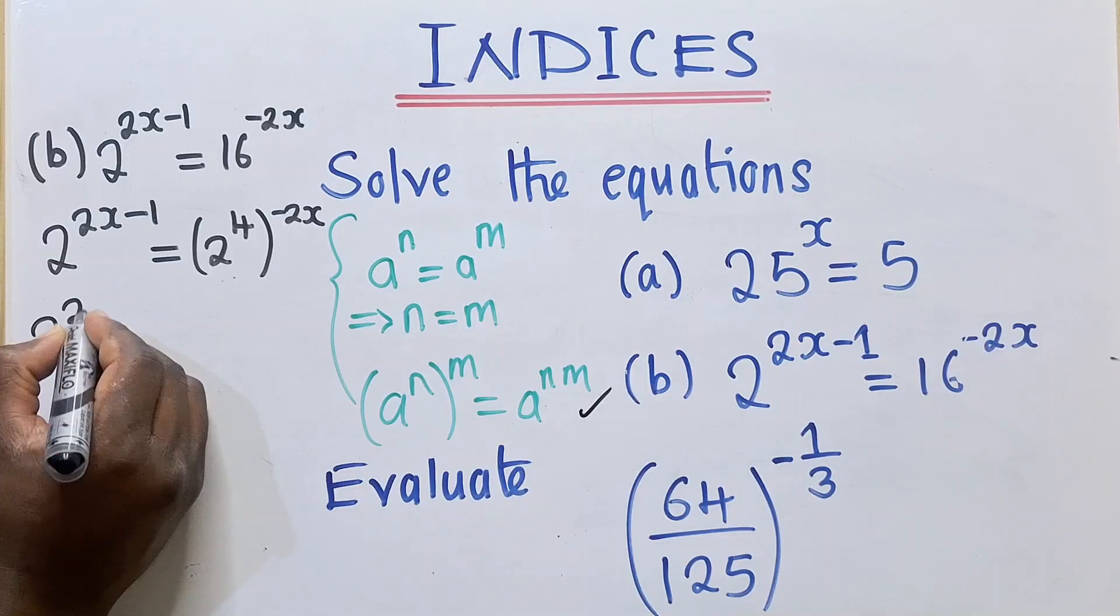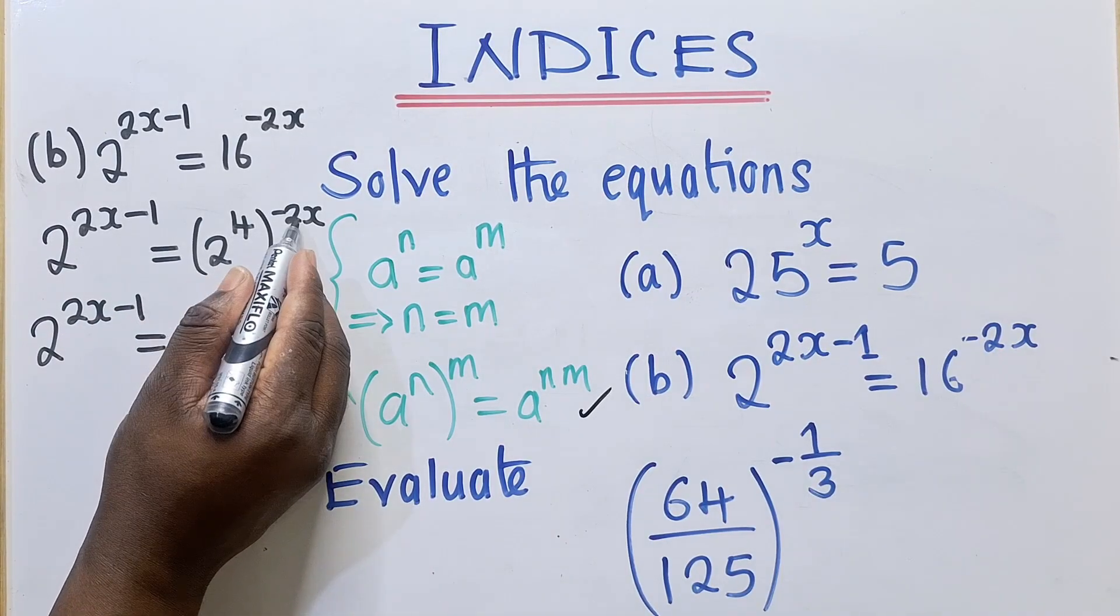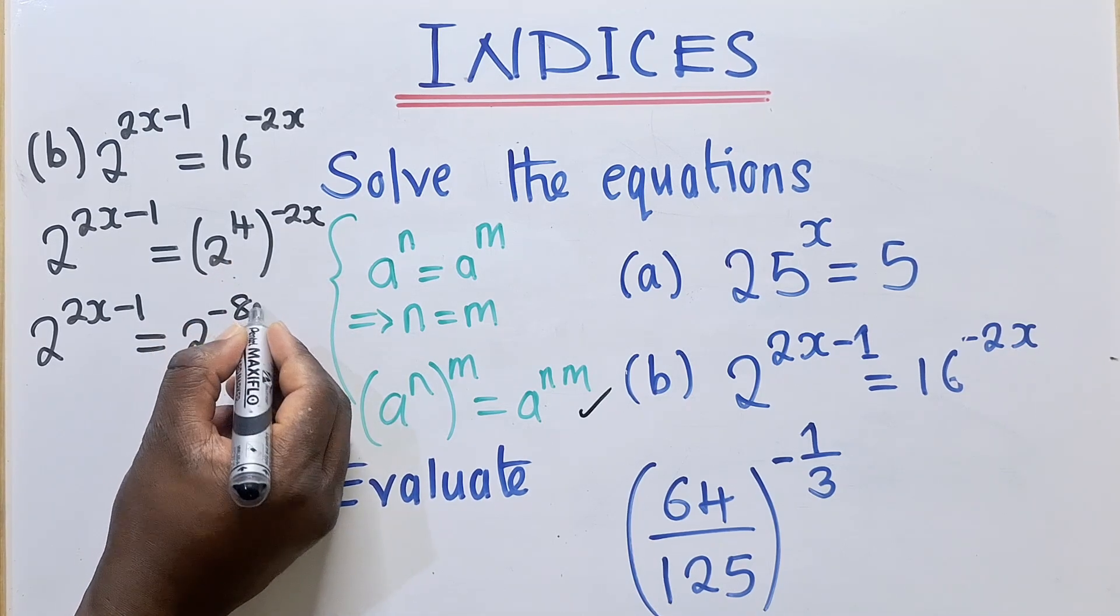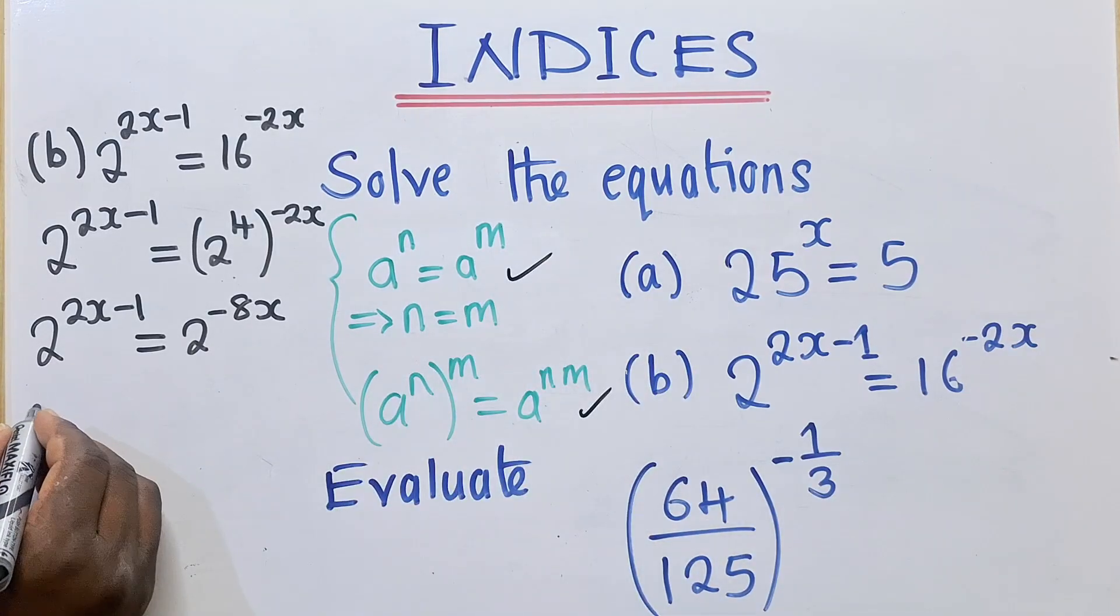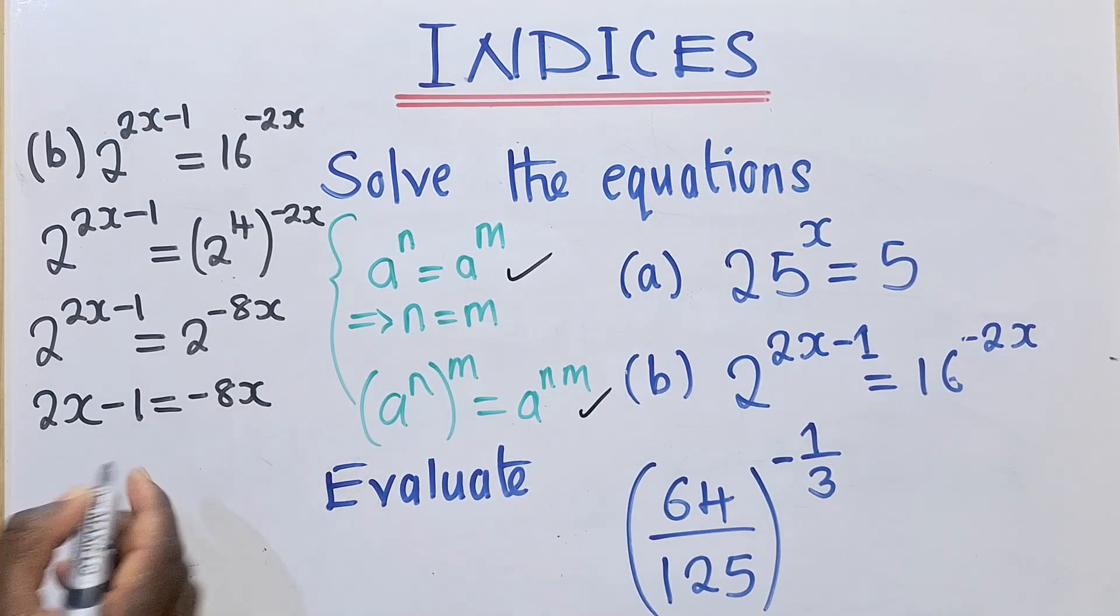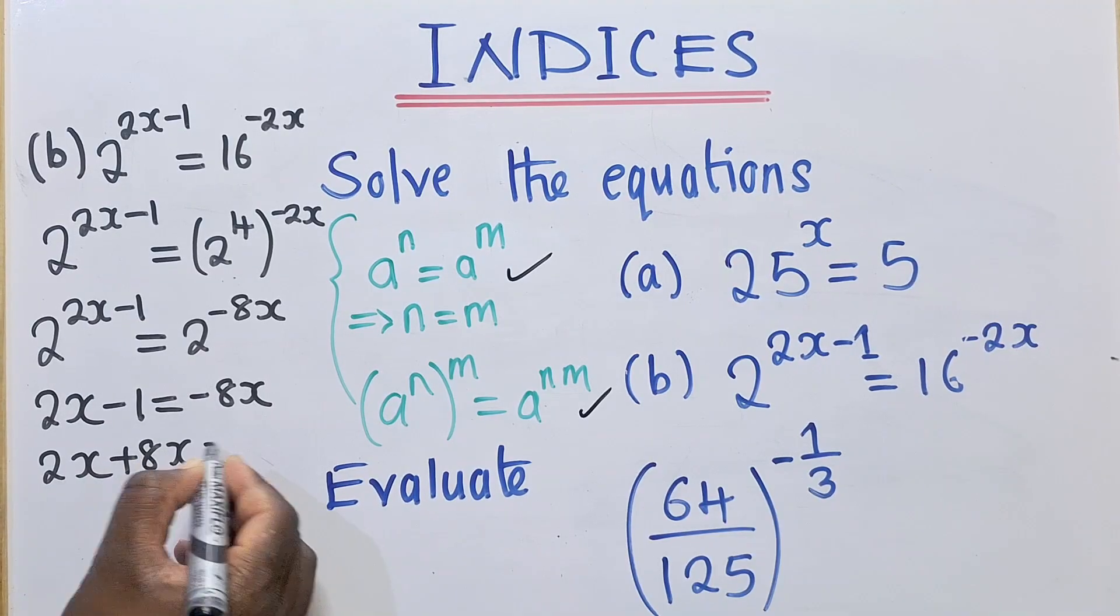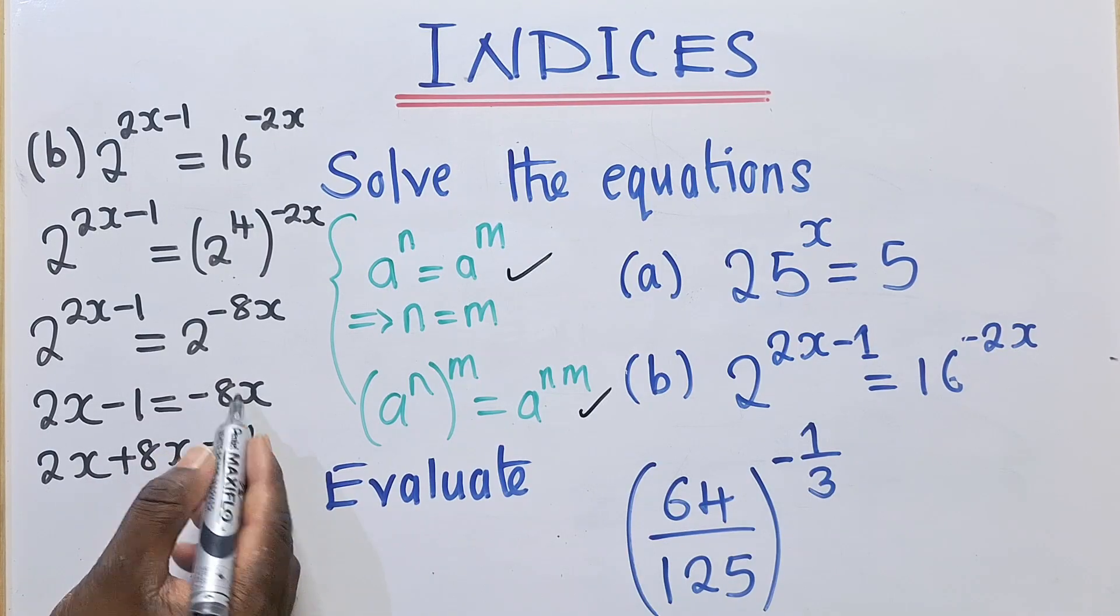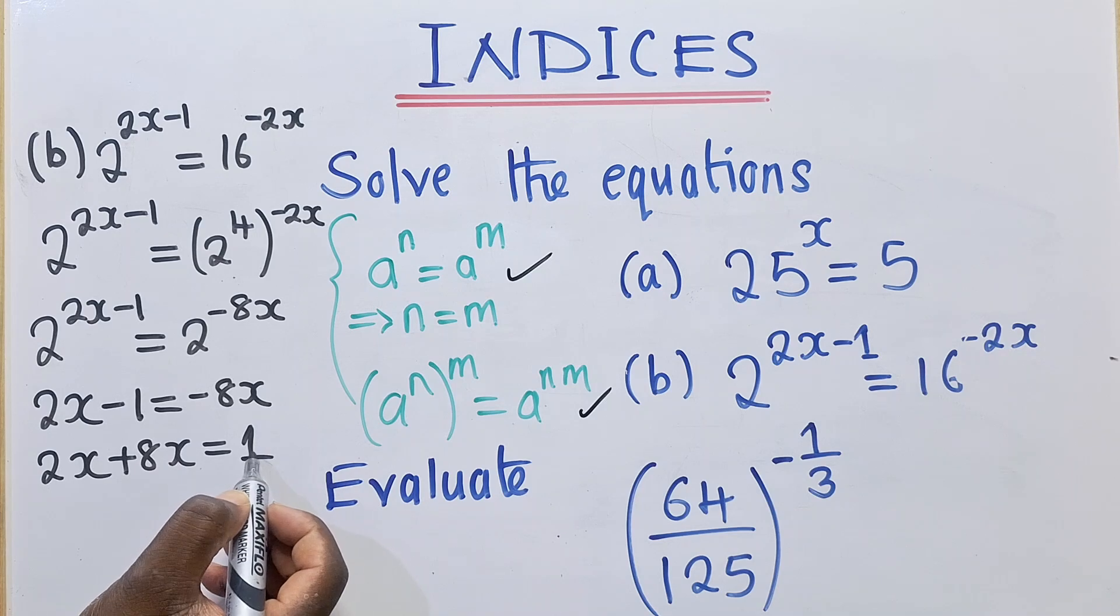This will be 2 power 2X minus 1, which is equal to 2. So power to power you multiply. This is 4 times negative 2X. It's negative 8X. Now the bases are equal to each other. We can apply this property. We shall say 2X minus 1 is equal to negative 8X. We group the like terms. This is 2X plus 8X is equal to 1. So this guy comes this side. It's positive. It was negative. It's now positive. And then negative 1 also goes the other side. It's positive 1.